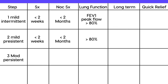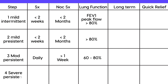Step 3 is moderate persistent — daily symptoms and about one nighttime symptom per week. Peak flow drops to 60–80%. Step 4 is severe persistent — continuous symptoms, frequent nighttime symptoms, and peak flow or FEV1 less than 60%.